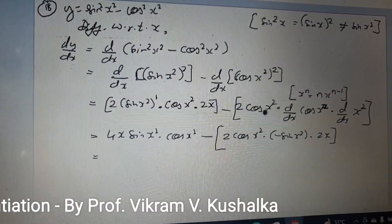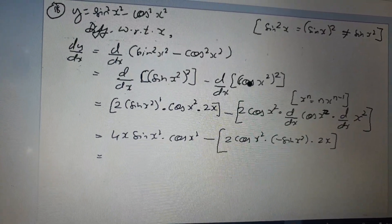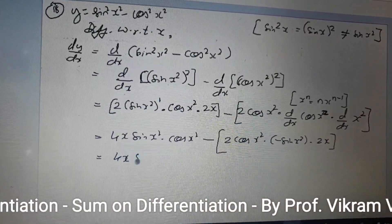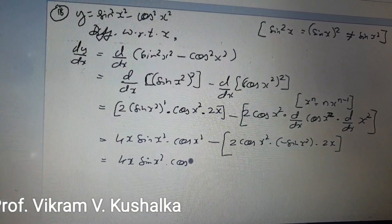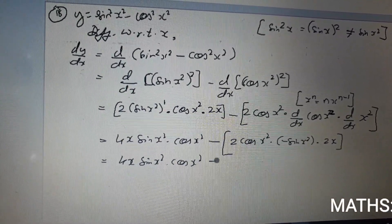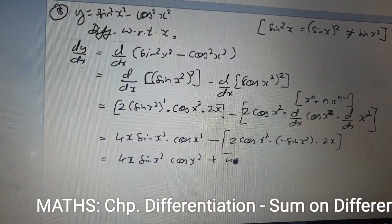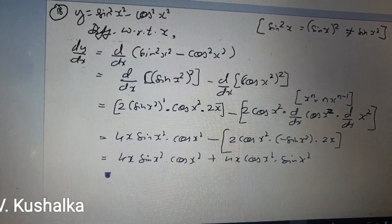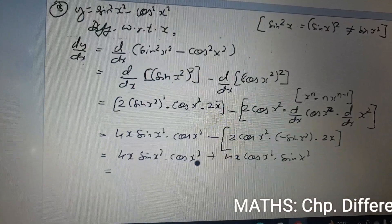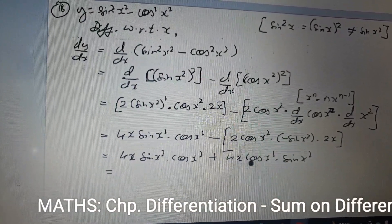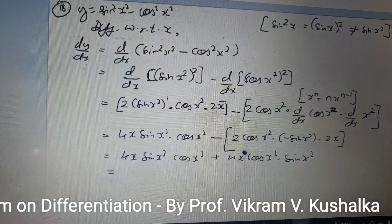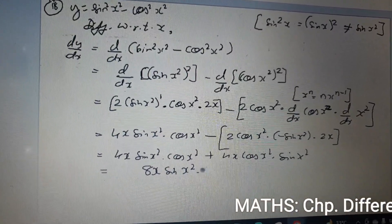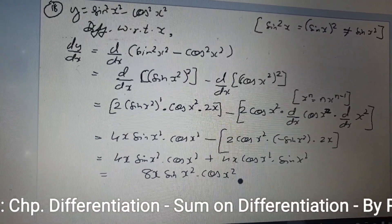In the chain rule, always open from outside to inside — you can never go from inside to outside. So we get 4x·sin x²·cos x². The negative times negative makes the second term positive, and 2 × 2x gives 4x again, so we get 4x·cos x²·sin x². Both terms are the same, giving us 8x·sin x²·cos x².